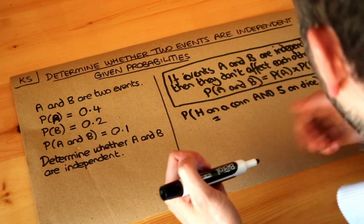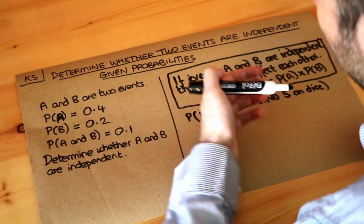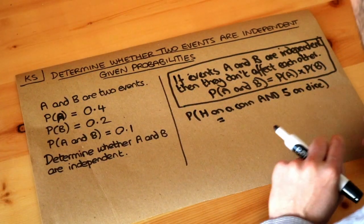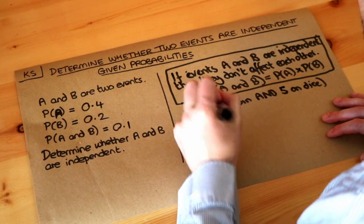Well because the coin and the dice don't influence each other, whatever you toss on the coin, if you got a heads that doesn't influence how you're going to throw your dice. It's not going to make it more or less likely that you're going to get a five, so they're independent of each other.